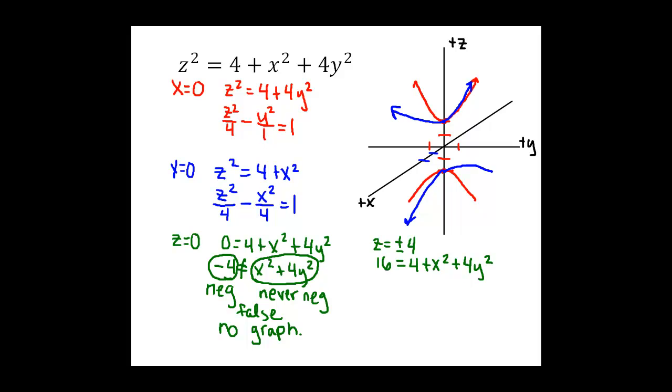Okay, and then if I subtract the 4 from both sides, I'll have 12 equals x squared plus 4y squared. And we'll recognize that as the equation of an ellipse. If I divide through by 12, I have 1 equals x squared over 12 plus y squared over 3.